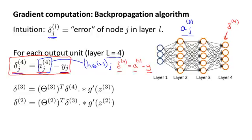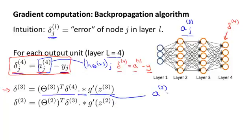What we do next is compute the delta terms for the earlier layers in our network. The formula for delta three is: delta three equals theta three transpose times delta four, element-wise multiplied by g prime of z3. The dot-times is the element-wise multiplication operation we know from MATLAB. This term g prime of z3 is formally the derivative of the activation function g evaluated at the input values given by z3. Pragmatically, what you do to compute this g prime, these derivative terms, is just a3 dot-times (1 minus a3), where a3 is the vector of activations for that layer.